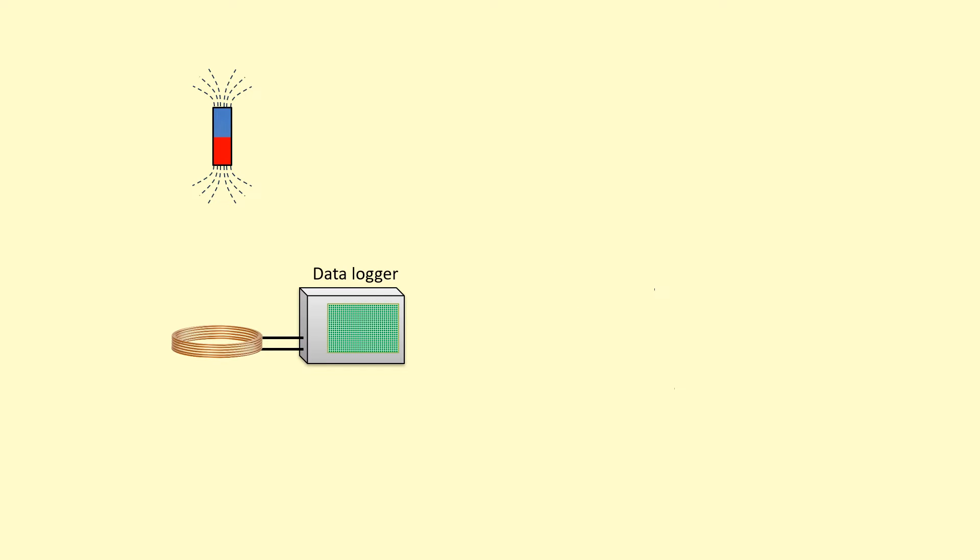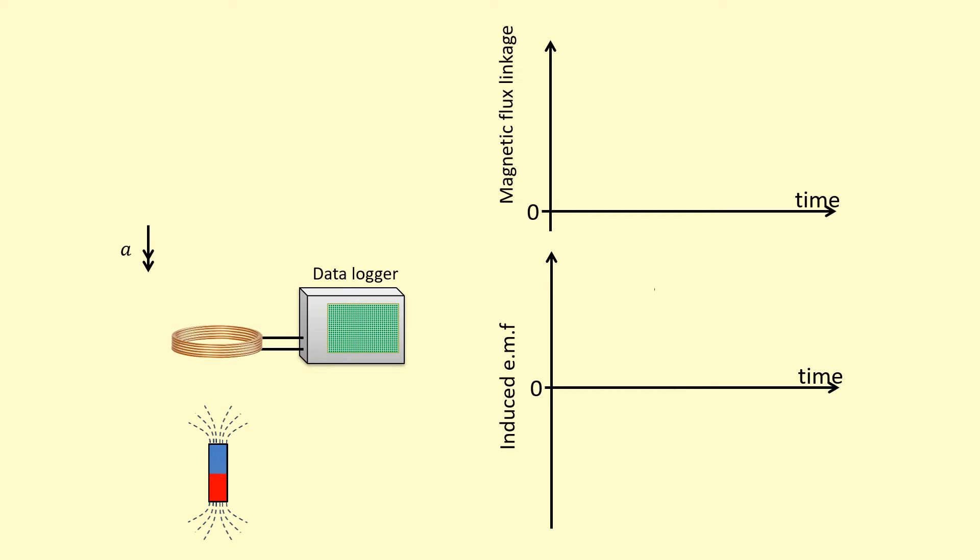The same magnet and coil of wire, except now I've linked it up to a data logger, which is going to record the EMF induced inside the coil. I'm going to release it and it's going to accelerate downwards. It's going to go through the coil like so, and I'm interested in the EMF against time graph like so. But before I do that, I'm going to plot the magnetic flux linkage against time.